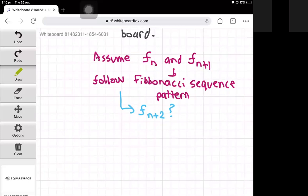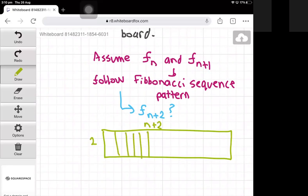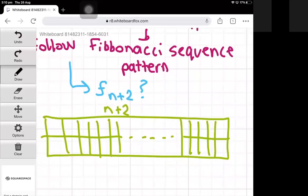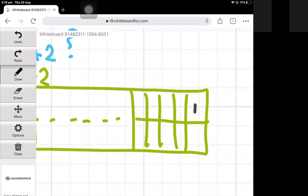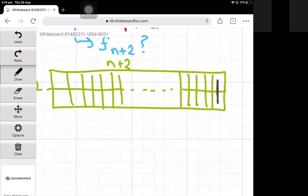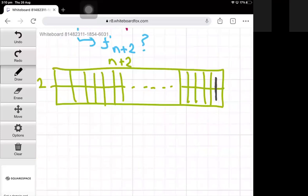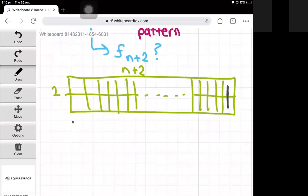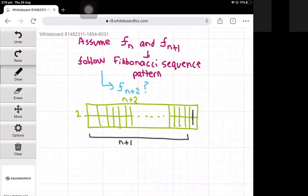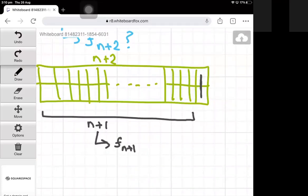To see what F of n plus 2 looks like, we have to tile a 2×(n+2) grid with dominoes. Now let's have a look at the right edge of this grid. We could tile the very right edge just using a vertical line like this. If we do a vertical line, we now have a 2×(n+1) grid left to tile. The number of ways to tile the remaining 2×(n+1) grid is just F of n plus 1.